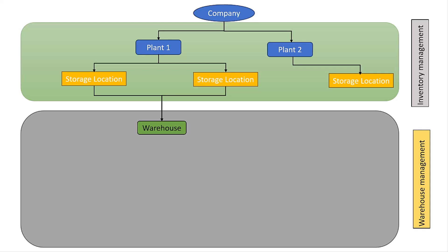The next organization unit is the warehouse. A warehouse is a unique location within a plant that is used to store all kinds of materials such as raw materials, finished materials, and semi-finished materials. A warehouse is a physical or logical location where products are stored, managed, processed, and tracked within an organization.